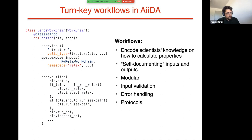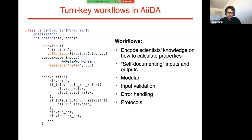When we define inputs on what we call the spec of a work chain, we can automatically specify what kind of input nodes we expect — for example, a structure uses a specific StructureData type stored in the database, and you also have to provide a help string. We have tools that automatically show what inputs are required, making it easy for users to start running these work chains. We also want our work chains to be modular: inside the band structure work chain, you can optionally calculate and optimize the geometry using a different work chain called the PwRelax work chain, which can be plugged into higher-level work chains to build very complex workflows.